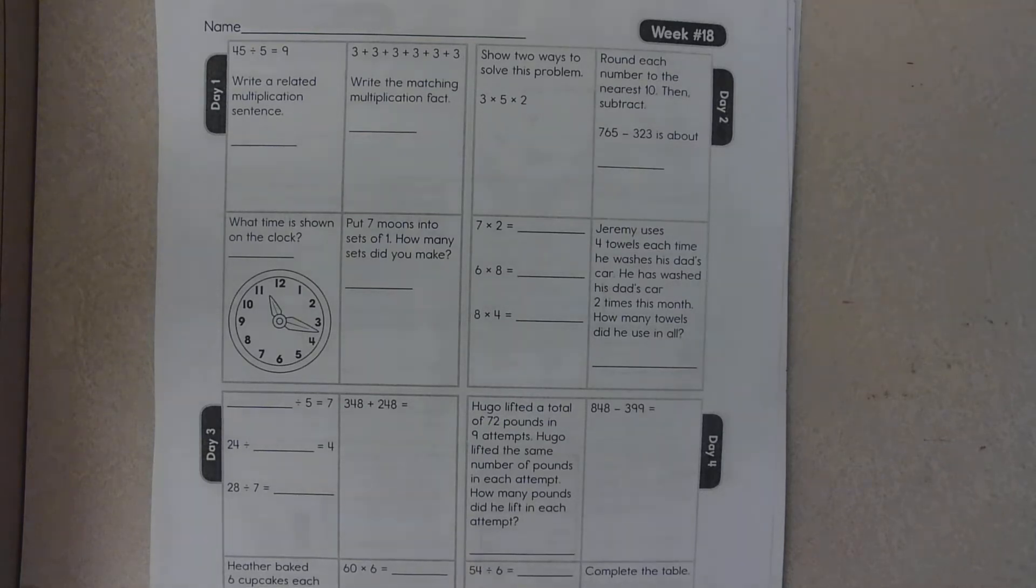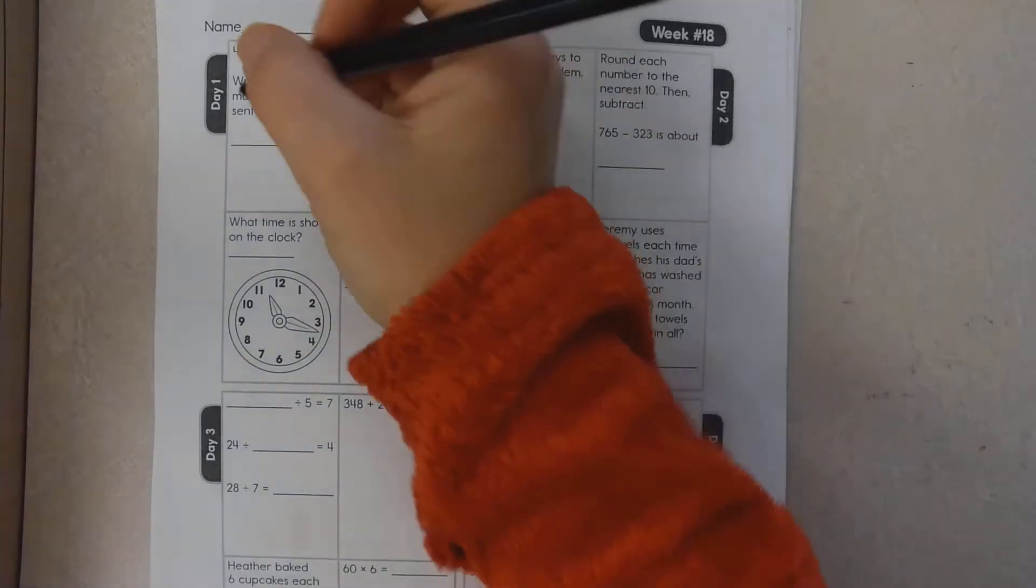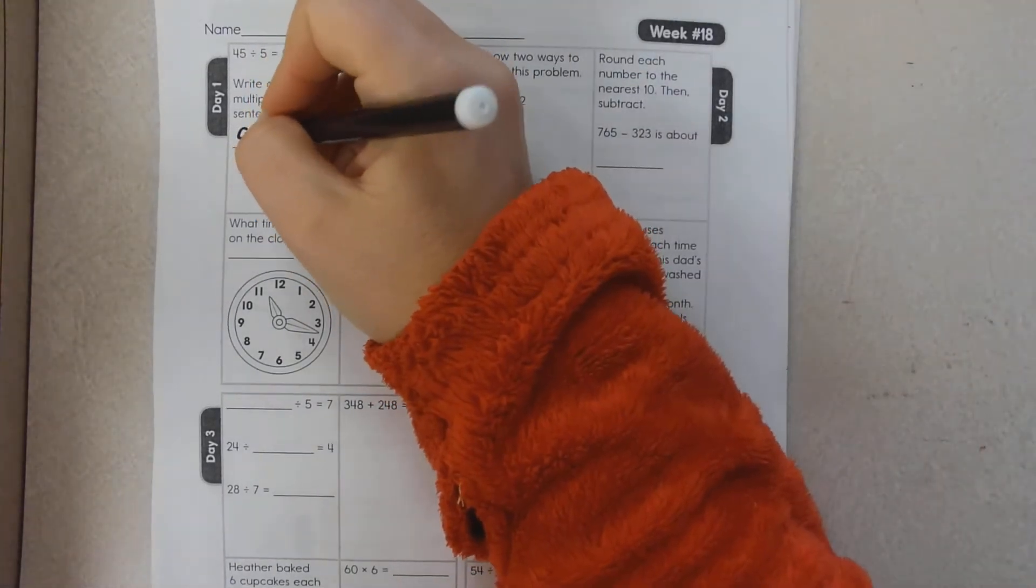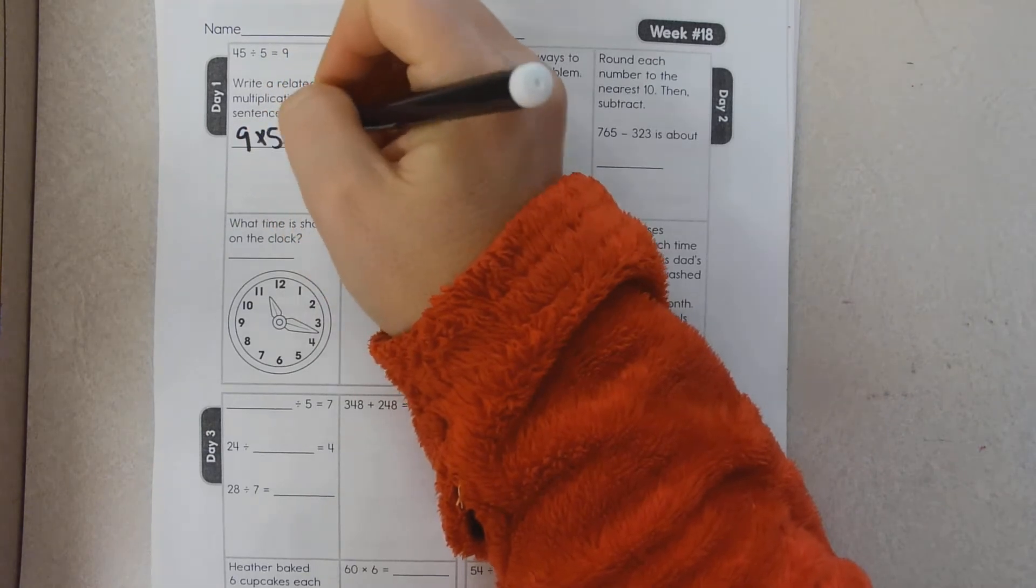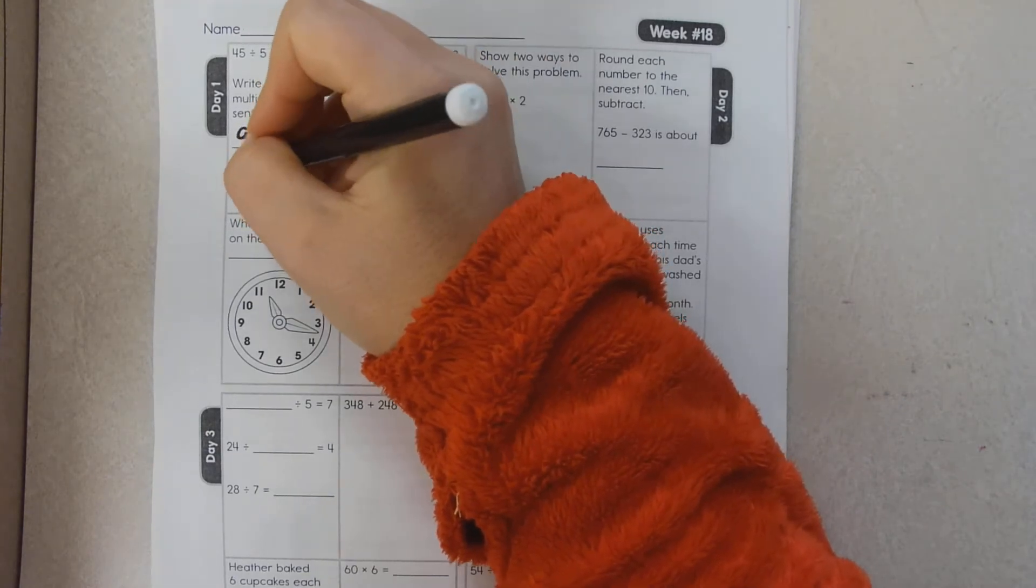Hello boys and girls, we are on day one of week 18 math for today and it says to write a related multiplication sentence. So basically you're trying to find your fact family. 9 times 5 equals 45, 5 times 9 equals 45. Either one of these would be the related multiplication sentence.